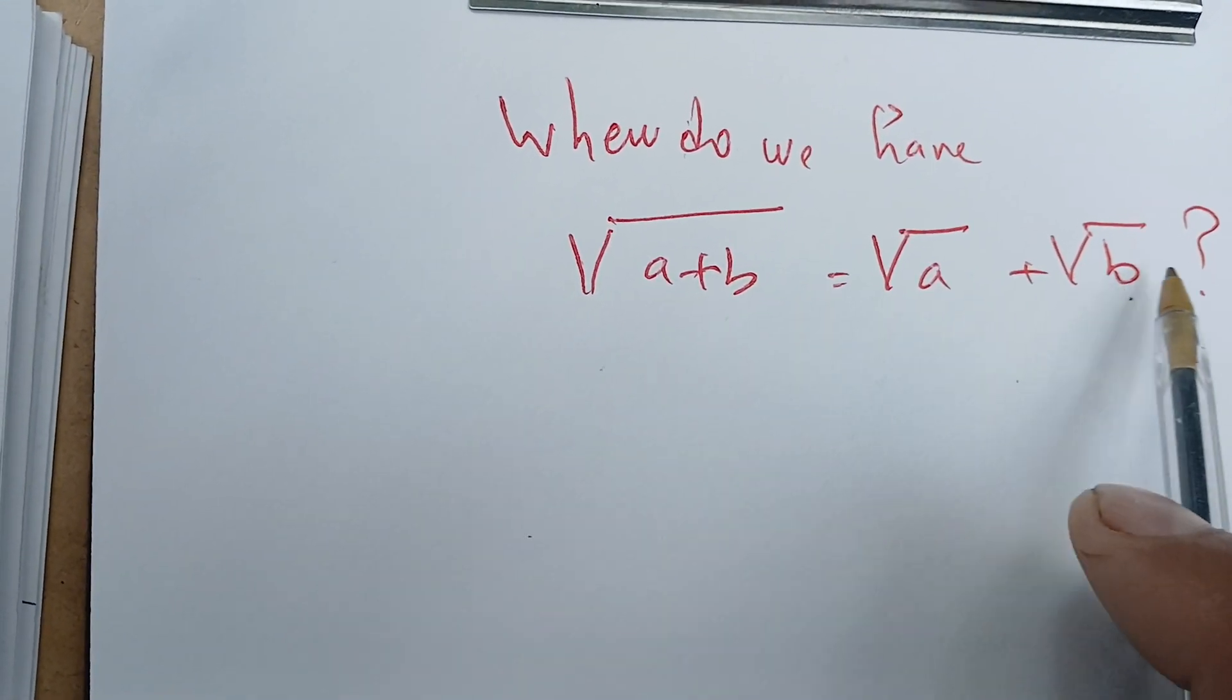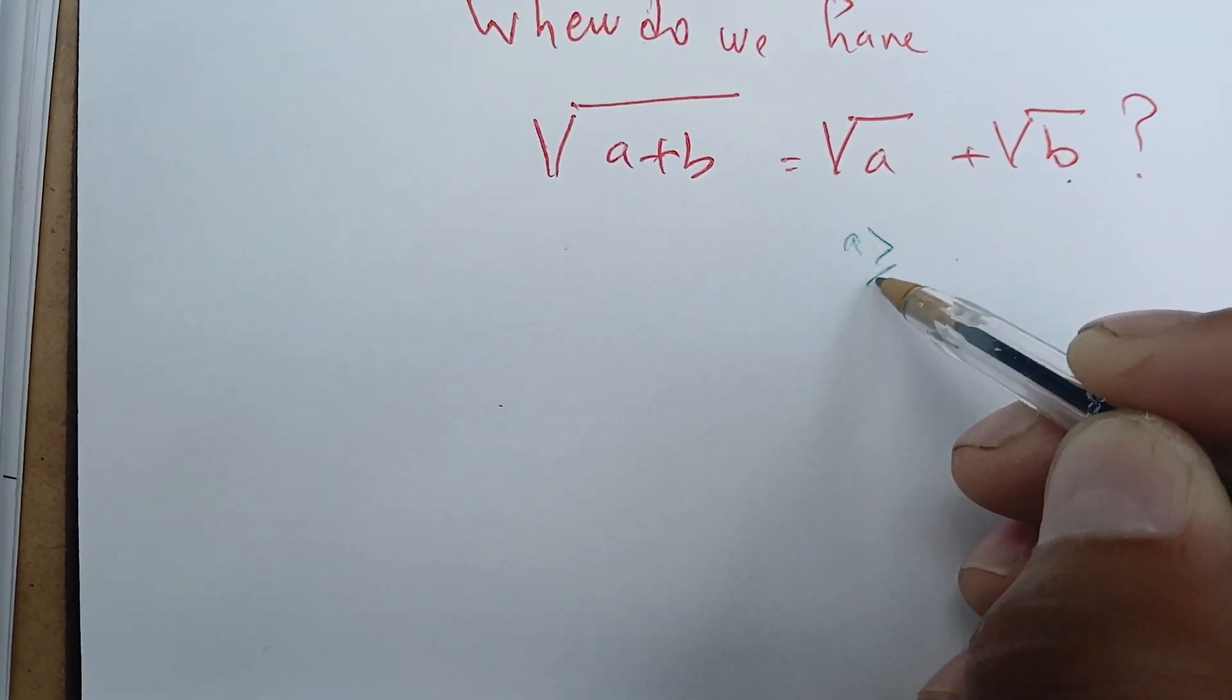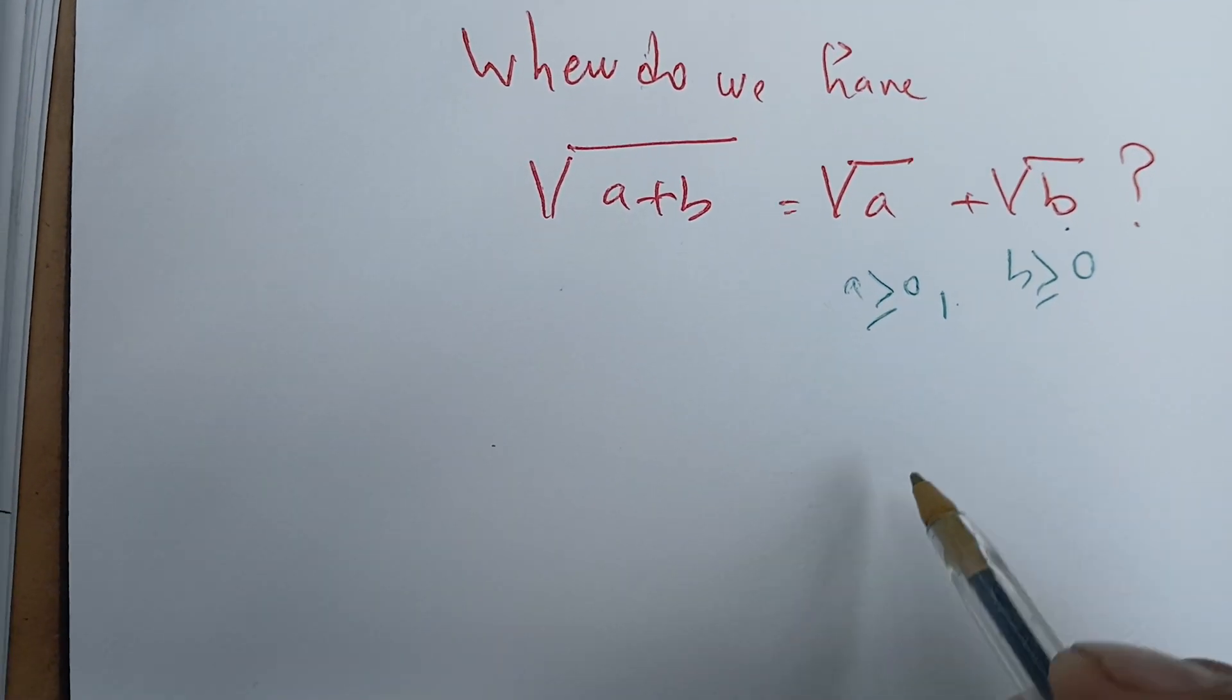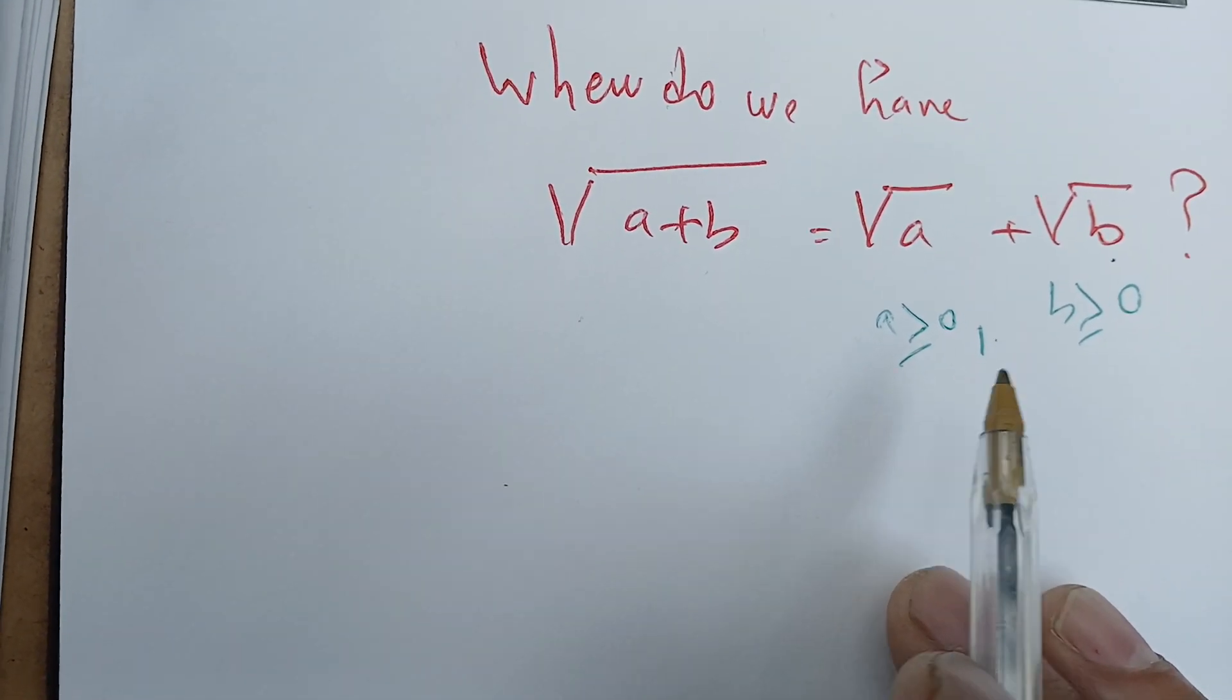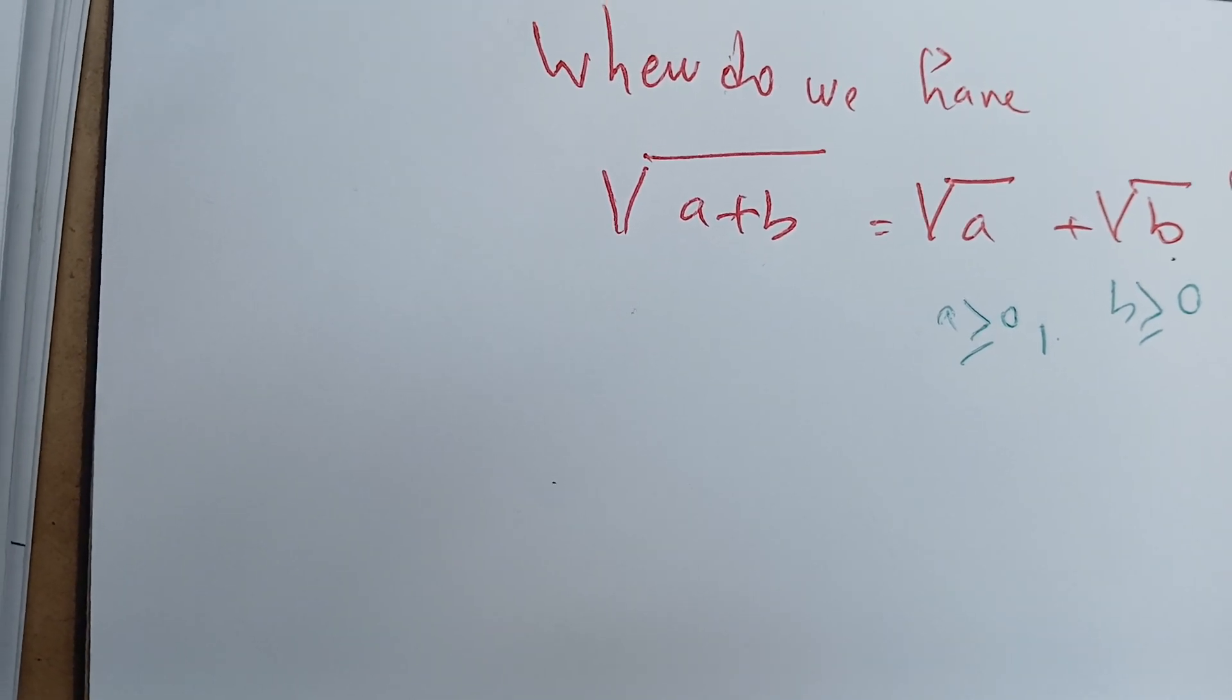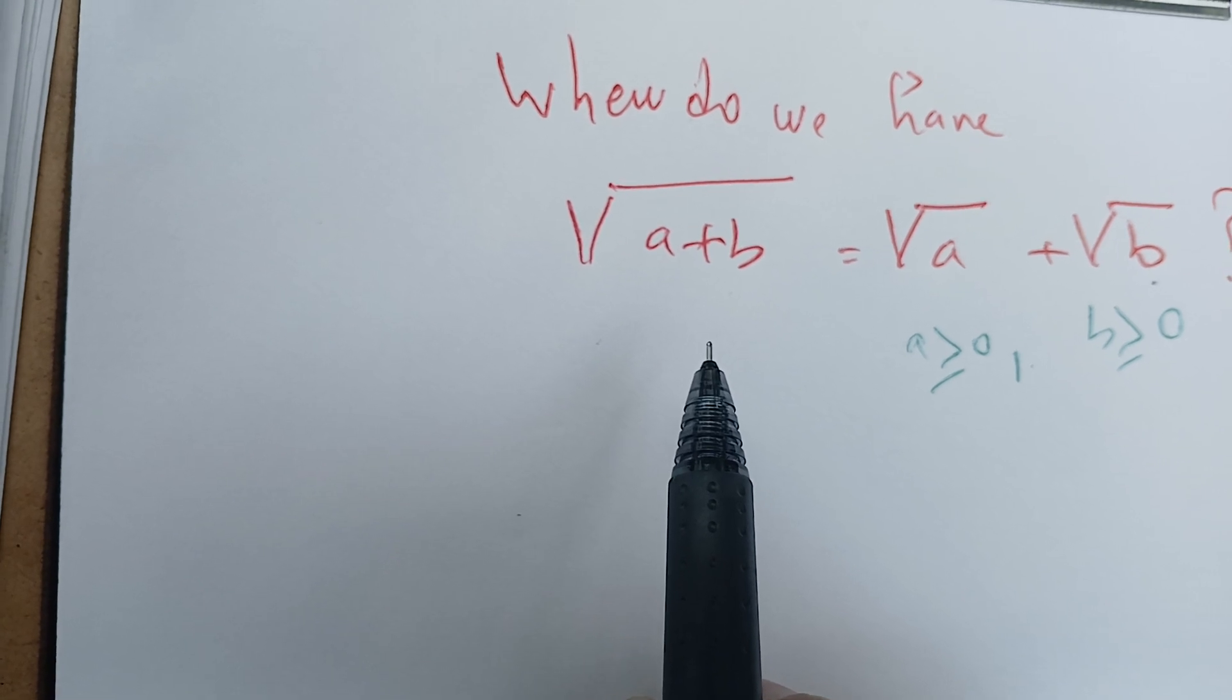Before doing so, we can talk about something like this: if a is greater than or equal to zero and b is greater than or equal to zero, because we have the square root and it's defined only for positive numbers. Can this one be true? It's not true in general. There are particular cases when this one is true, but in general this is false.